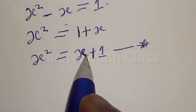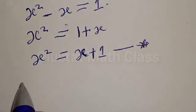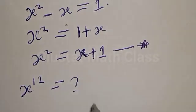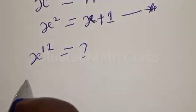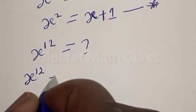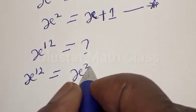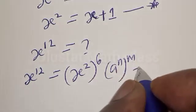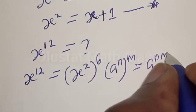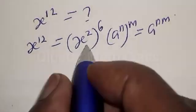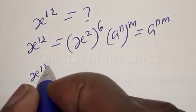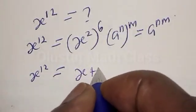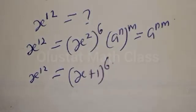From our question we have s raised to power 12, which is what we are looking for. This can be expressed as s squared raised to power 6, because a raised to power n raised to power m equals a raised to power n times m. Therefore s raised to power 12 equals (s squared) raised to power 6, and since s squared equals s plus 1, we have (s plus 1) raised to power 6.